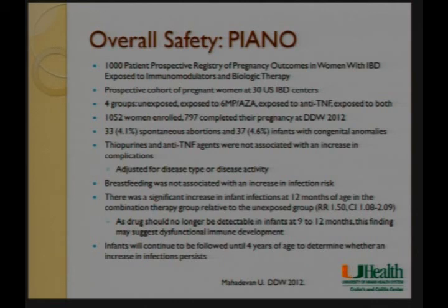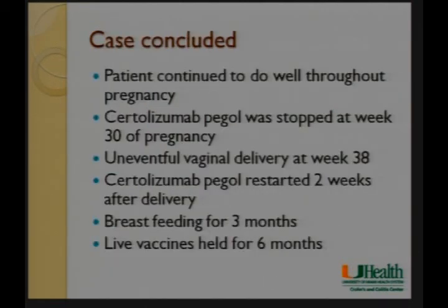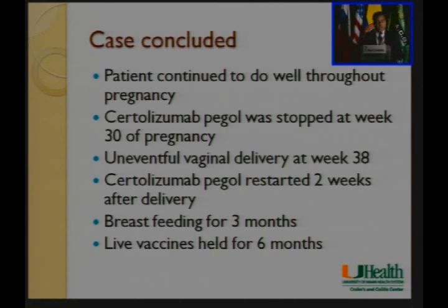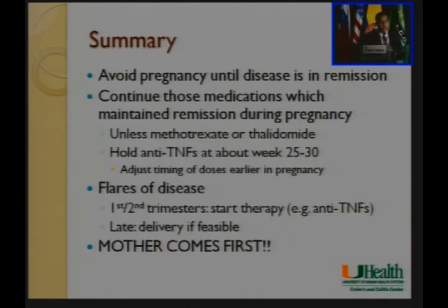In our patient, she did very well throughout pregnancy. Her certolizumab pegol was stopped at week 30 — I normally like to stop at around 30 to 31 weeks to minimize placental transfer. She had an uneventful vaginal delivery at week 38. We restarted her drug two weeks later; she breastfed for about three months, which was fine. We asked her pediatrician to hold all live vaccines for six months. The baby is now three years old and doing very well.